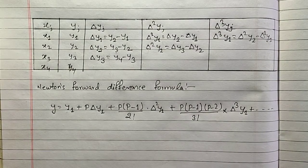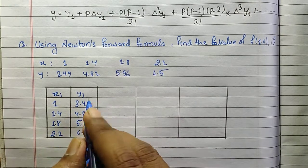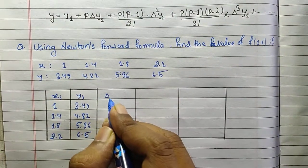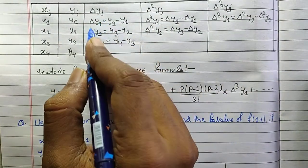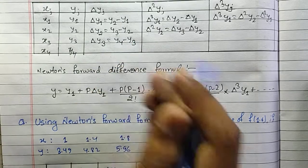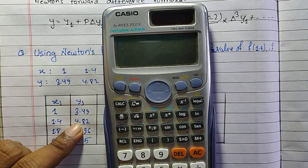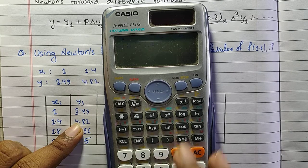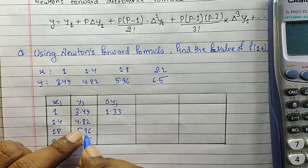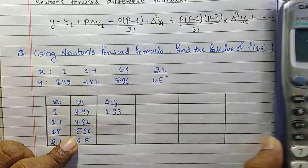Now let's solve a numerical. I have drawn the table — let us first find the forward differences. For finding delta y_j: delta y1 equals y2 minus y1, delta y2 equals y3 minus y2, delta y3 equals y4 minus y3. So delta y1 equals 4.82 minus 3.49, which gives 1.33. For delta y2, that is 5.96 minus 4.82, which gives 1.14.